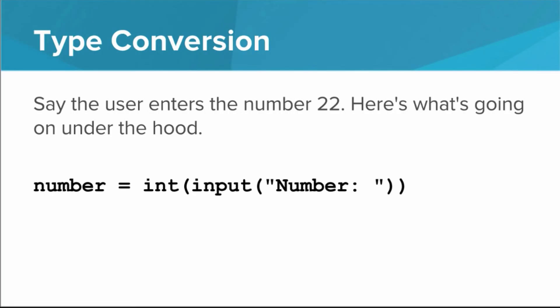Let's step through what Python does assuming the user enters the number 22. The input function prints the prompt, and the user types 2, 2, and the enter key. Python then replaces the call to input with the string 22. The int function then takes the string 22 and turns it into the integer 22. This is what ultimately gets stored in number.